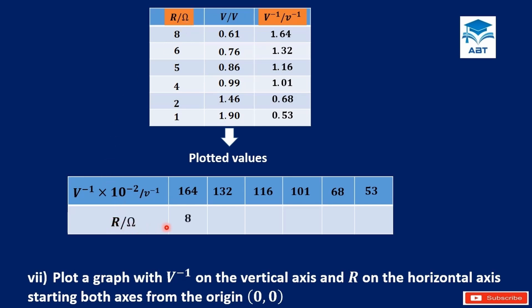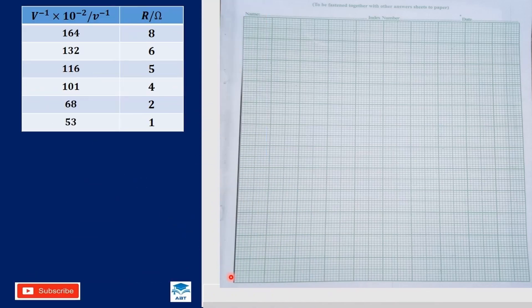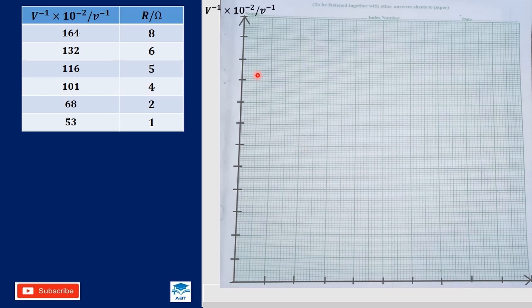The values of R are 8, 6, 5, 4, 2, and 1. We draw the vertical and horizontal axes and label them: V inverse times 10 exponent negative 2 per volt on the vertical axis, and R in ohms on the horizontal axis.